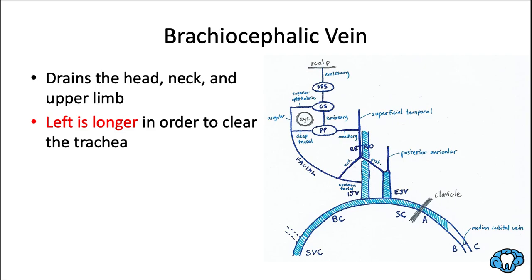Let's talk about the brachiocephalic vein. Here is a drawing looking at the left side of the venous drainage network. Brachiocephalic — brachio meaning arm, cephalic referring to the neck — so it's draining the head, neck, and upper limb. This time there is a brachiocephalic vein on both sides of the body, whereas for arteries there's only one brachiocephalic artery on the right side. The left brachiocephalic vein is longer to clear room for the trachea.